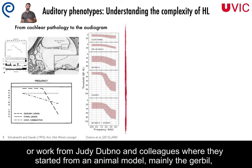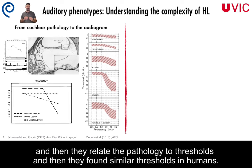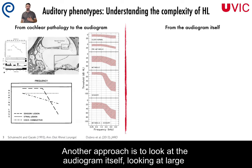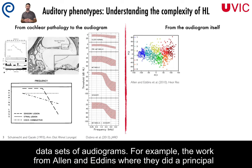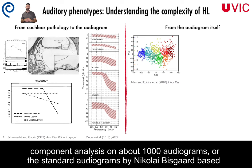Or work from Judith Abner and colleagues, where they started from an animal model, mainly the gerbil, and then they related the pathology to thresholds and found similar thresholds in humans. Another approach is to look at the audiogram itself, looking at large datasets of audiograms — for example, the work from Allen and Edis, where they did principal component analysis on about 1,000 audiograms.